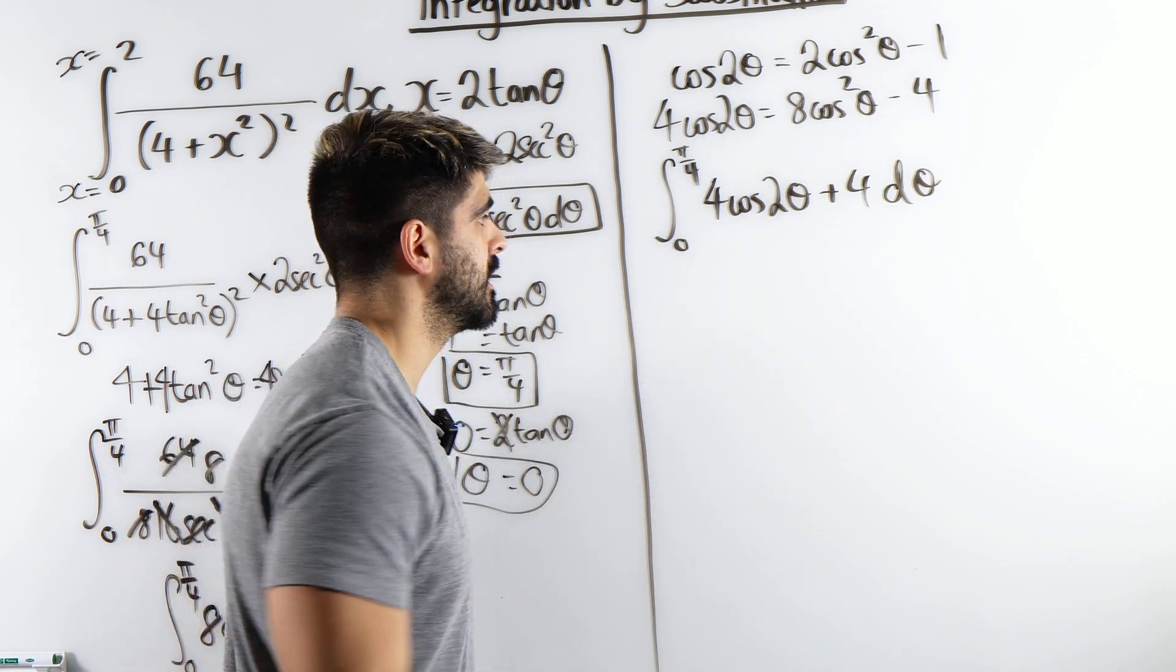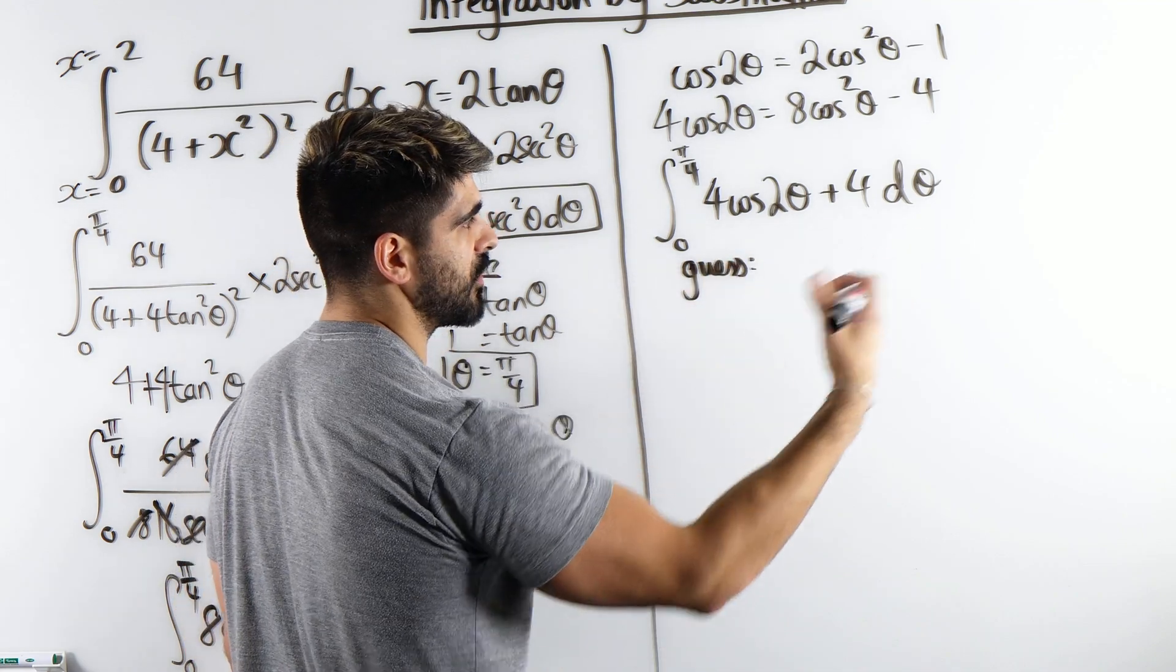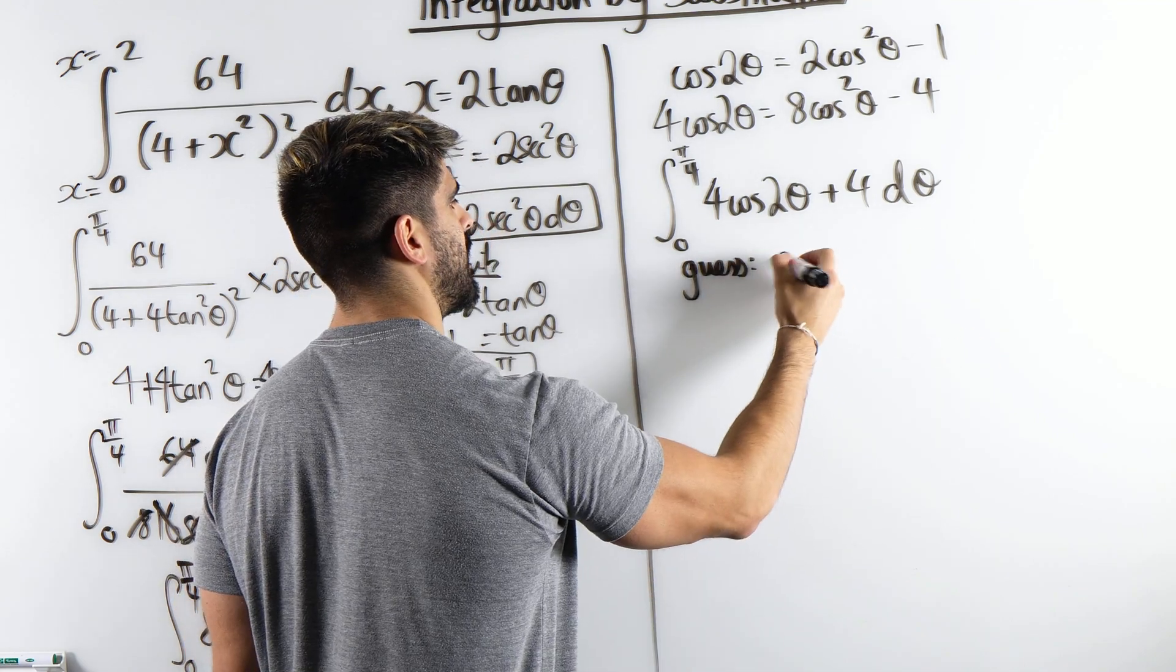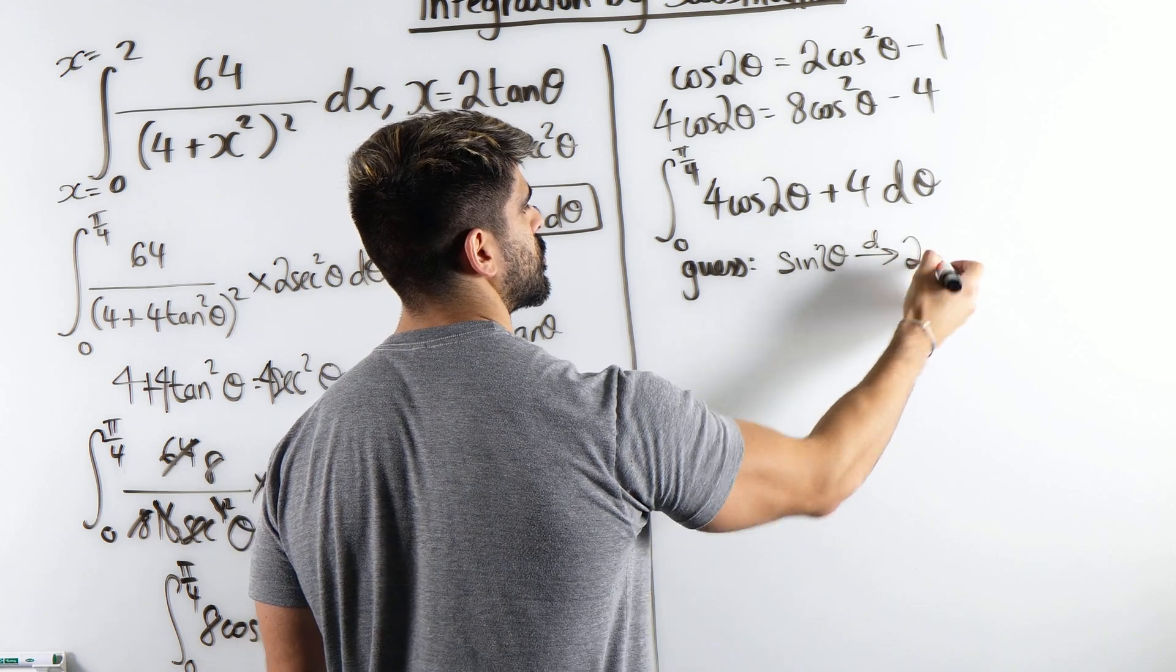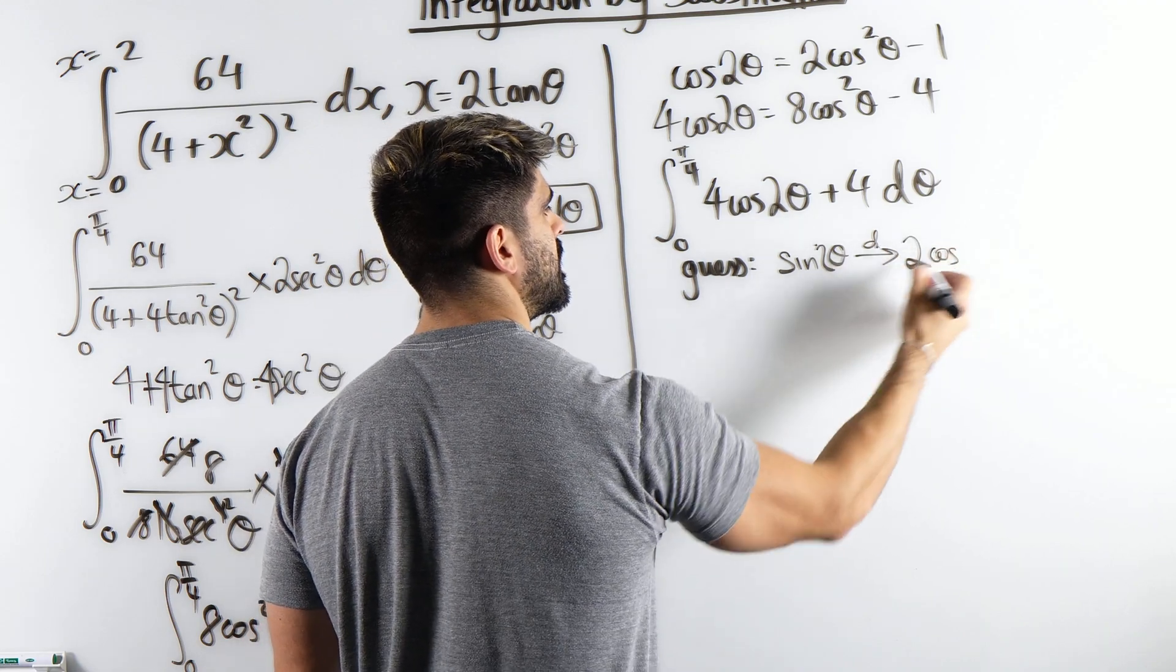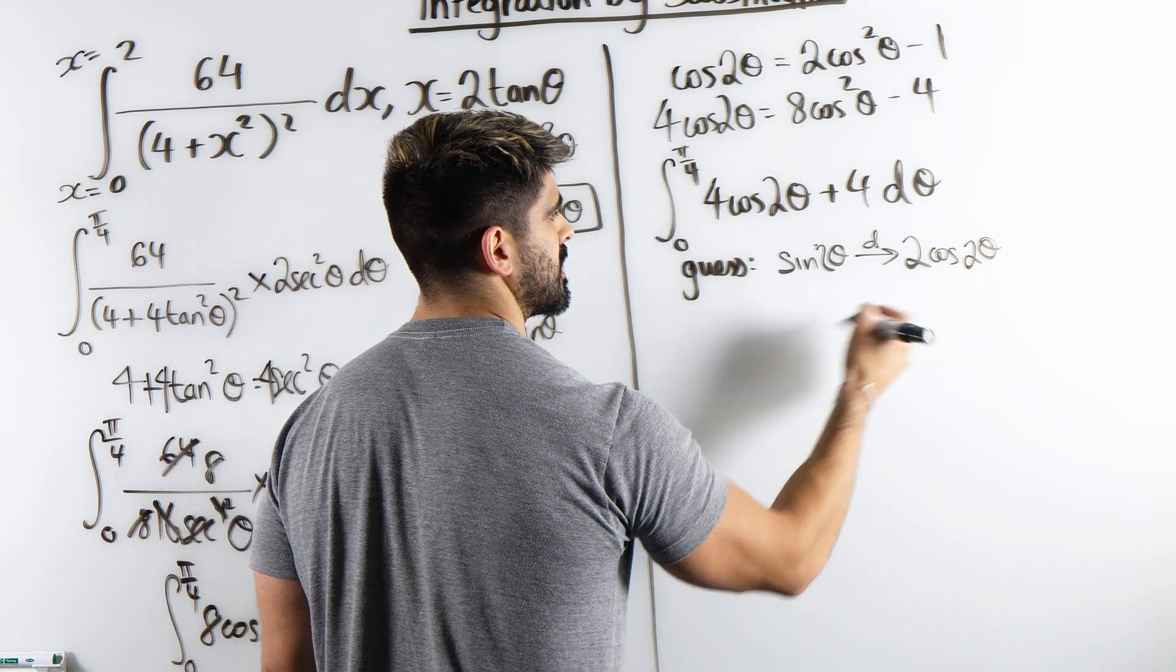This is a very simple guess method. We're thinking what differentiates to cos 2 theta, sine 2 theta. Then we just check. That differentiates to, differentiate the angle 2, sine differentiates to cos. Angle stays the same. But I want it to be 4. So that integrates to this, but I wanted 4. So I'm going to double both sides.